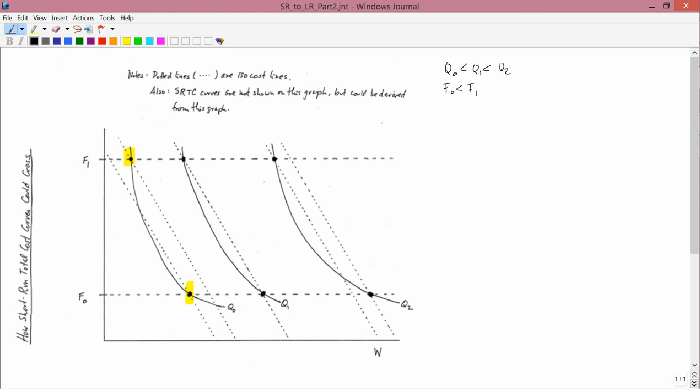And the question is, what's cheaper? I've drawn iso-cost lines. Here I've indicated that the dotted lines are iso-cost lines.